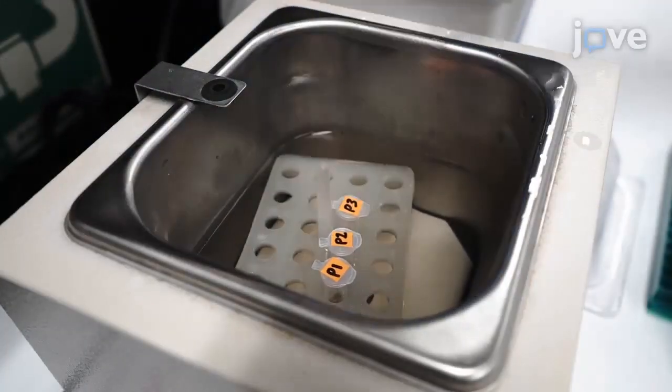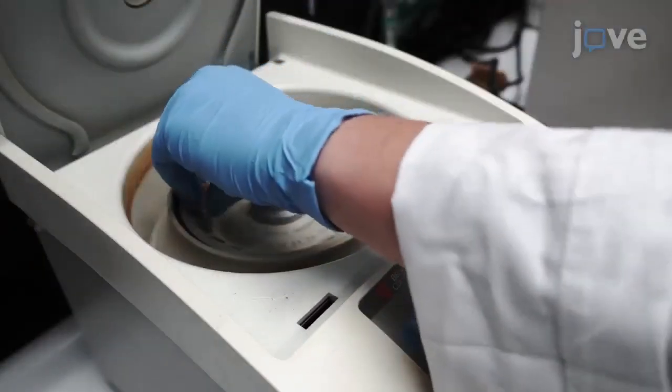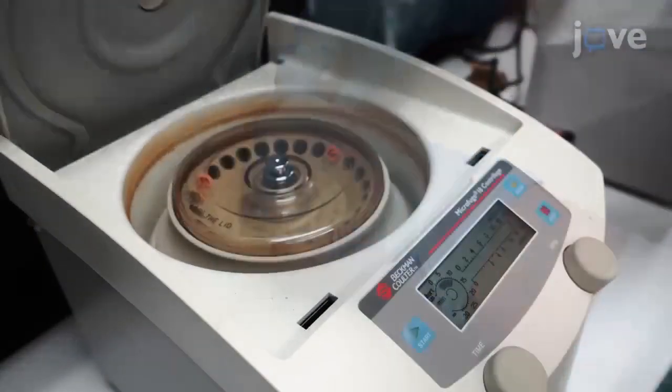Place the tubes in a preheated hot water bath for 15 minutes. After this, centrifuge the tubes at 15,000 g for 10 minutes.